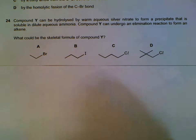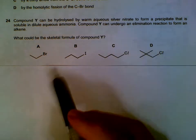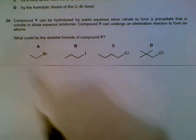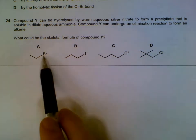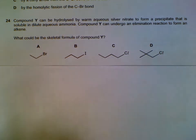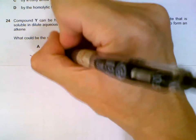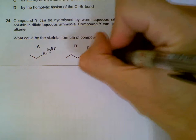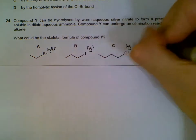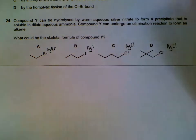Question 24: Compound Y can be hydrolyzed by silver nitrate and we form a precipitate that is soluble in dilute aqueous ammonia. Which one could be compound Y? When halogenoalkanes are hydrolyzed and react with silver nitrate, we will get precipitates: silver bromide, silver iodide, silver chloride.